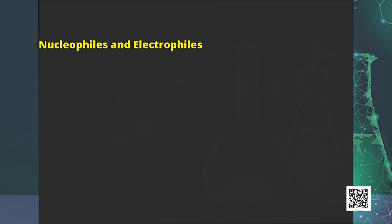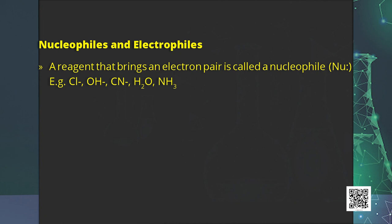After discussing two types of cleavage, we discuss attacking reagents — of three types: free radicals, electrophiles, and nucleophiles. A reagent that brings an electron pair is called a nucleophile. Nucleophiles may be negatively charged or neutral species having at least one lone pair of electrons. Examples of anionic nucleophiles include Cl⁻, OH⁻, and CN⁻, while water and NH3 are neutral nucleophiles.